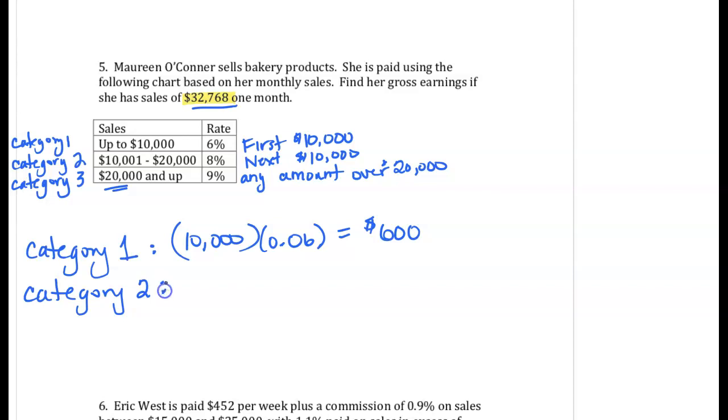In Category 2, the most amount of sales you're going to have is $10,000 in sales, and that's from the $20,000 high end minus the $10,000 from the previous category that you already earned commission. So at most you're going to have $10,000 in sales in Category 2. And since we're up to the $20,000 and even over, we're going to use all $10,000 in sales in this category at 8% for a total of $800.